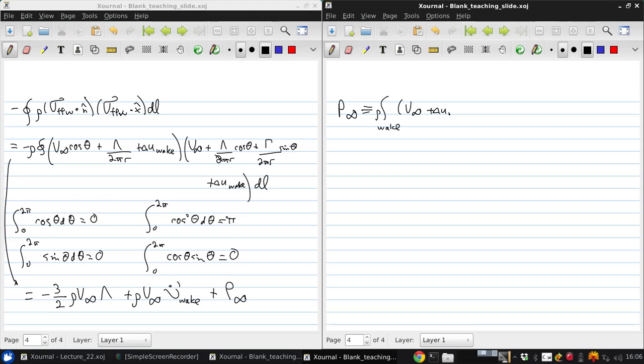plus delta u wake minus delta u wake dZ which is just rho integral u infinity minus u dZ. This is the definition of the momentum defect.